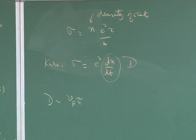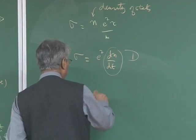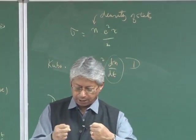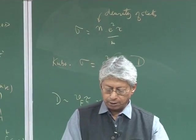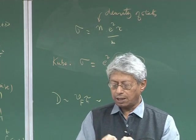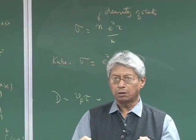So what is tau? Tau itself, just think about Maxwellian kinetic theory: tau is the mean free time between two collisions. The mean free time between two collisions is the mean free path divided by the Fermi velocity.